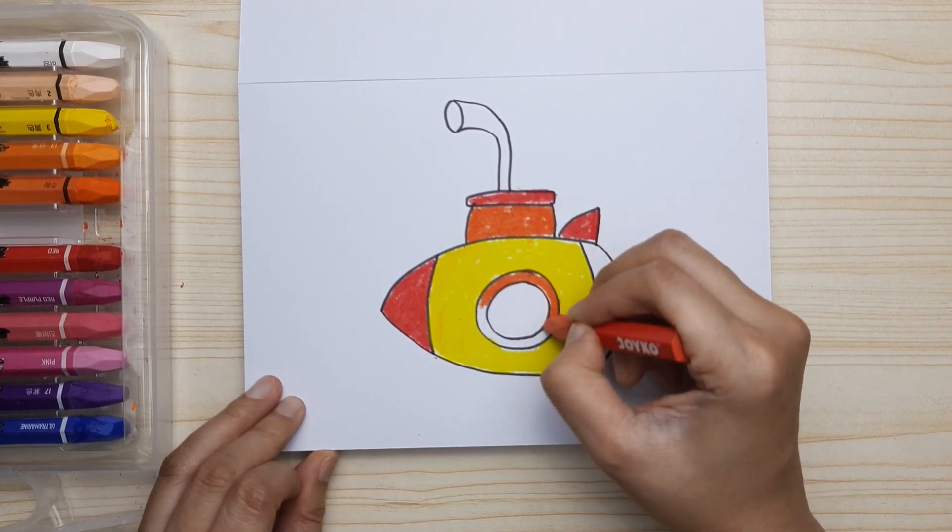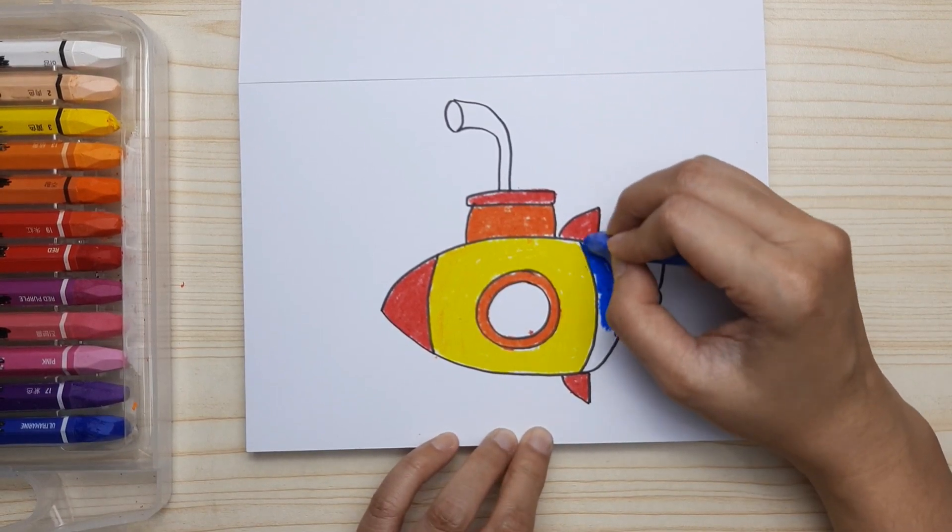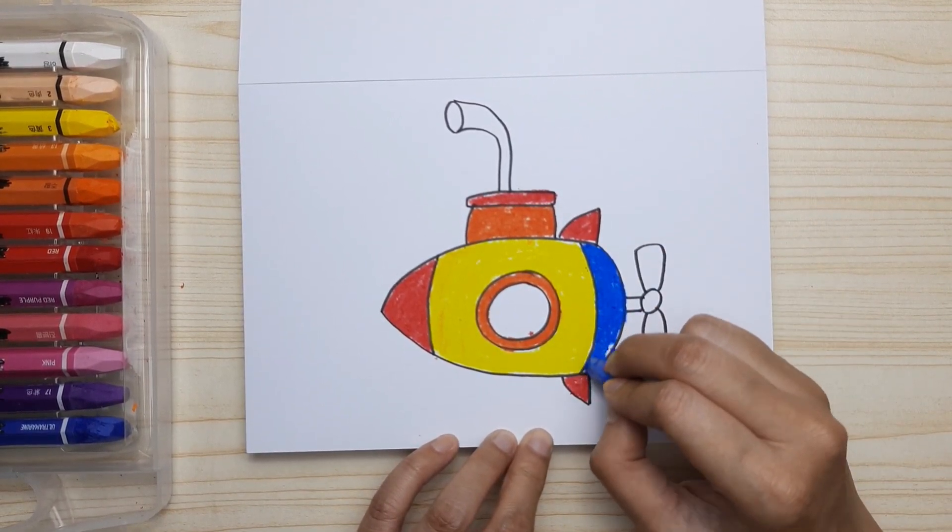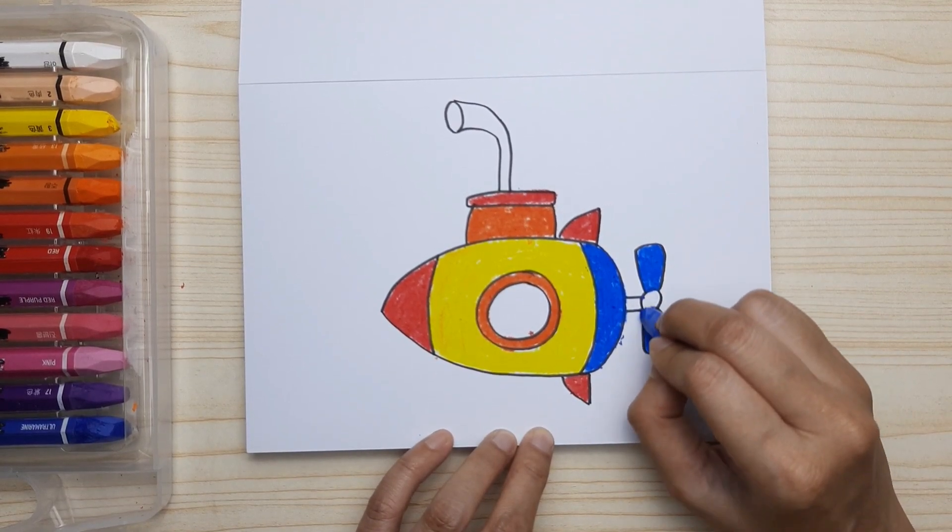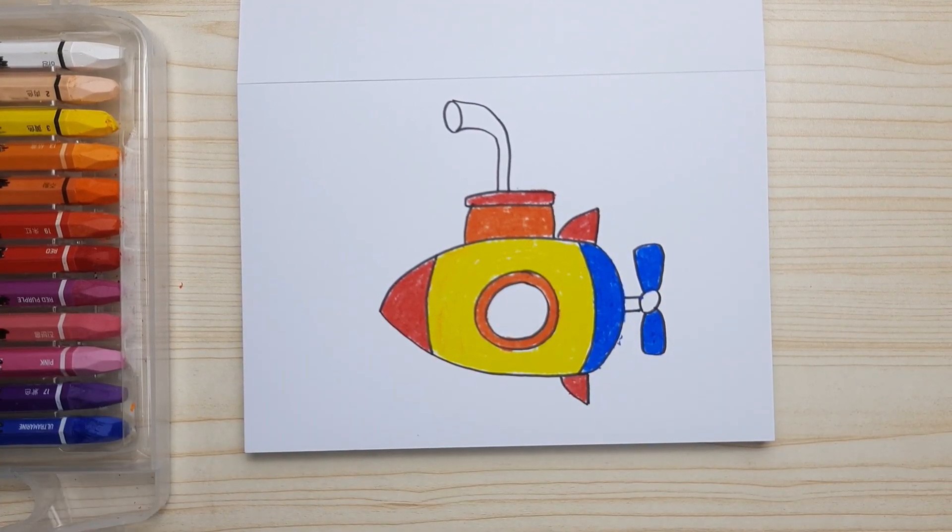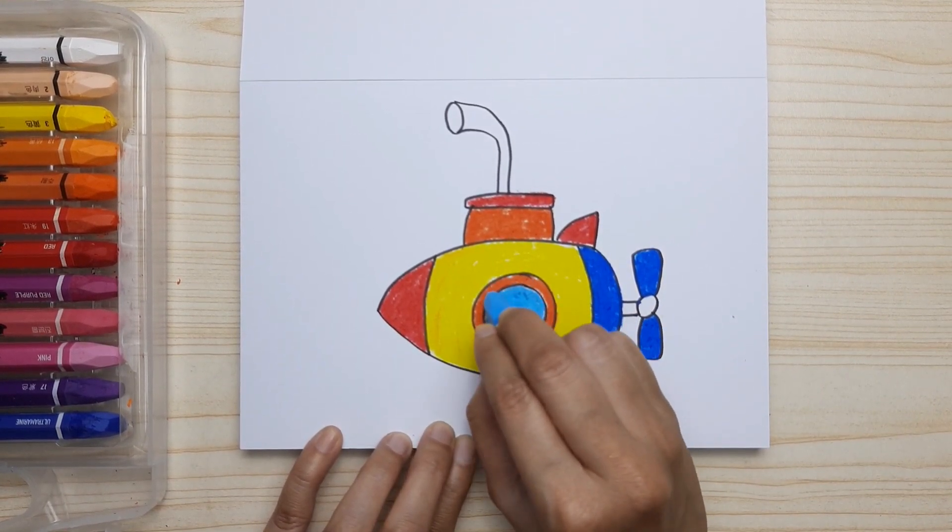Dark blue for the bottom and also the blades of the propeller. Light blue for the window, and also the pattern is dark blue.